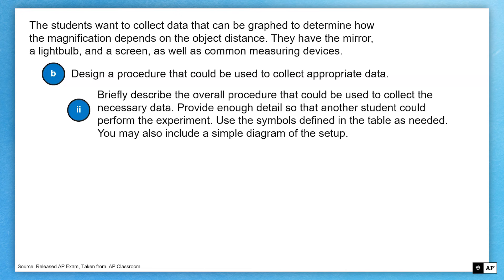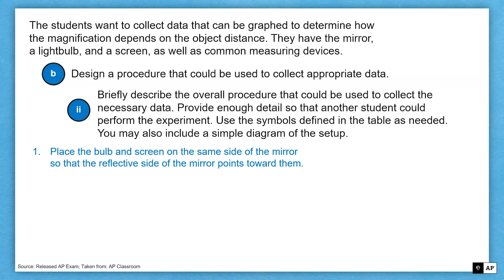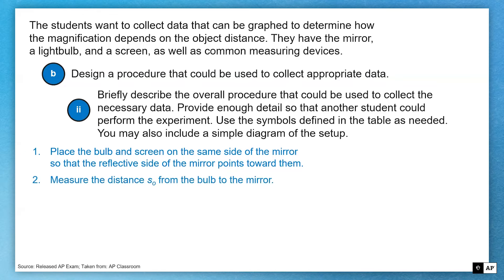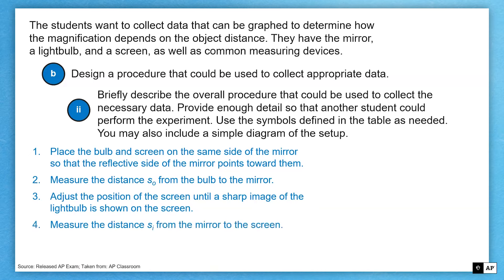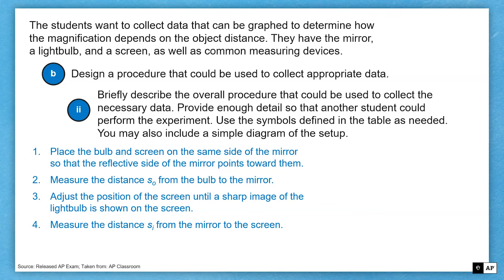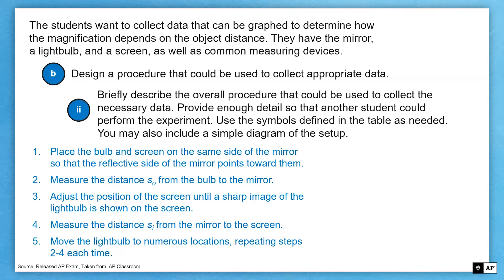Now we're going to tell somebody how to get that data and describe the procedure. Start by placing the bulb — our object — and the screen on the same side of the mirror, because it's reflective and the image forms on the same side. Measure the distance between the object and the mirror. Then adjust the screen until you get a sharp, crisp image of the light bulb on the screen. Once you find that, measure the image distance from the mirror to the screen. That gives us SO and SI — but we need a relationship, so move the light bulb to many different locations and repeat the measurements to get a wide data set.